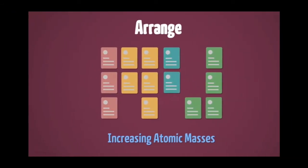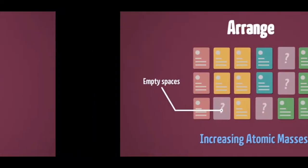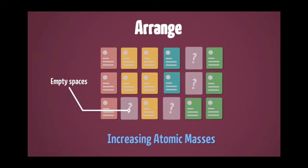Later, he wrote the physical and chemical properties of all the 63 elements in a card. Then, he started arranging the cards in the increasing order of their atomic masses. After arranging, he had two observations.